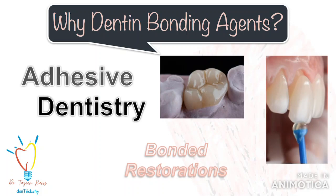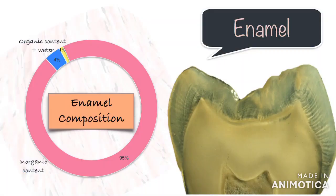This topic will be divided into two parts. The first part, in this video, I'll talk about the fundamentals of enamel and dentine bonding. The second part will concentrate on the different types or generations of bonding agents we have and the evidence-based practices currently used. I don't want to over-complicate things, so I'll try to keep things as simple as possible.